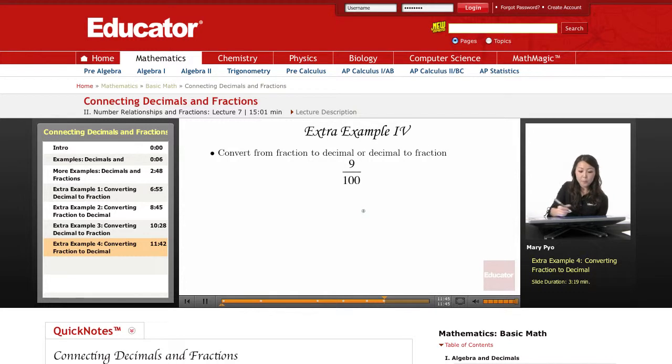So this fourth example here, I have a fraction, and I'm going to convert this into a decimal. Now, this top number tells me how many I have, and this bottom number tells me how many out of 100 I have, or how many out of a dollar I have.